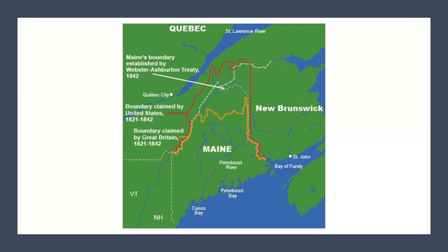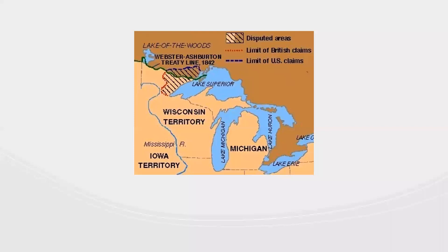Boundary adjustments were also made elsewhere in New York State, along the 45th parallel, and in the Minnesota region, where the Americans gained 6,500 square miles of territory — what turned out to be priceless ore-bearing land. In the end, both sides approved the Webster-Ashburton Agreement of 1842, which gave most of the disputed territory to the United States and established a clear northeastern boundary with British North America.